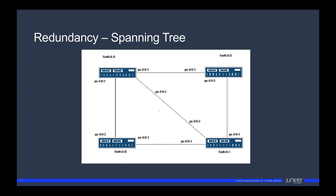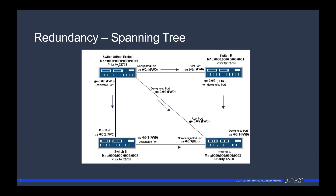How does spanning tree work? There's an algorithm that determines loops, then things like root port, forwarding port, and blocking port. With spanning tree, certain ports need to go into blocking state as a way to mitigate these loops. So that means we don't get to use all the available bandwidth — that's not ideal. This was just a simple redundant topology; just imagine networks with hundreds of switches. When things were small, a lot more manageable.